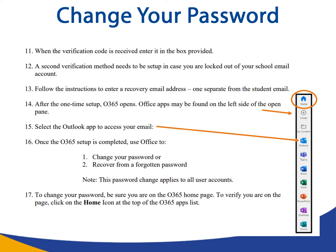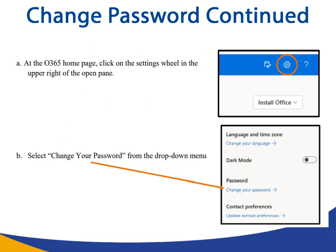Step seventeen: to change your password, be sure you are on the Office 365 homepage. To verify you are on the page, click on the home icon at the top of the Office 365 apps list. Step seventeen, part A: on the Office 365 homepage, click on the settings wheel in the upper right corner. Part B: select change your password from the drop-down menu.